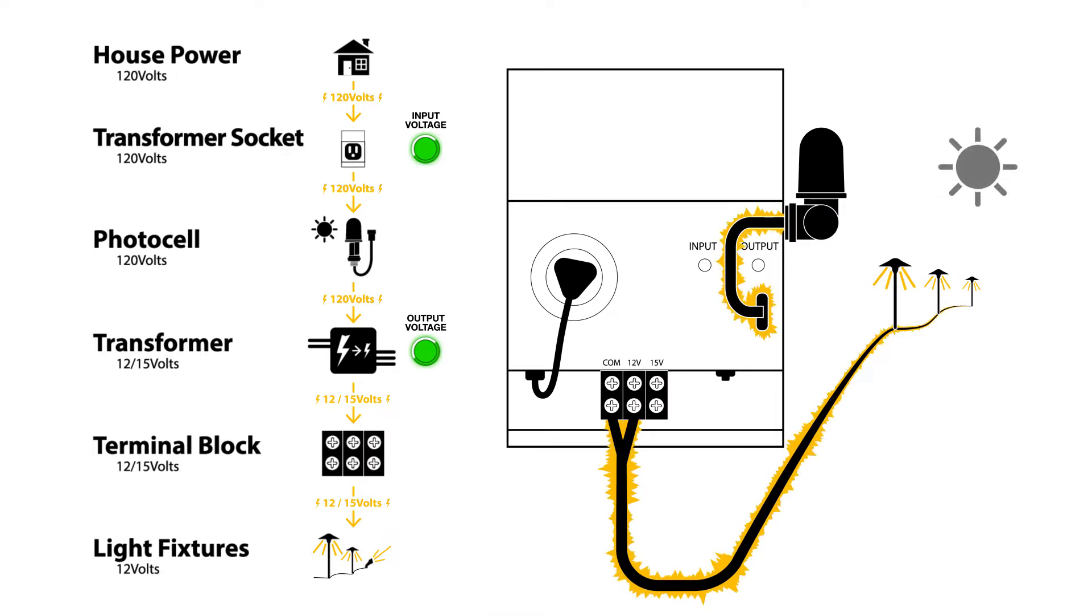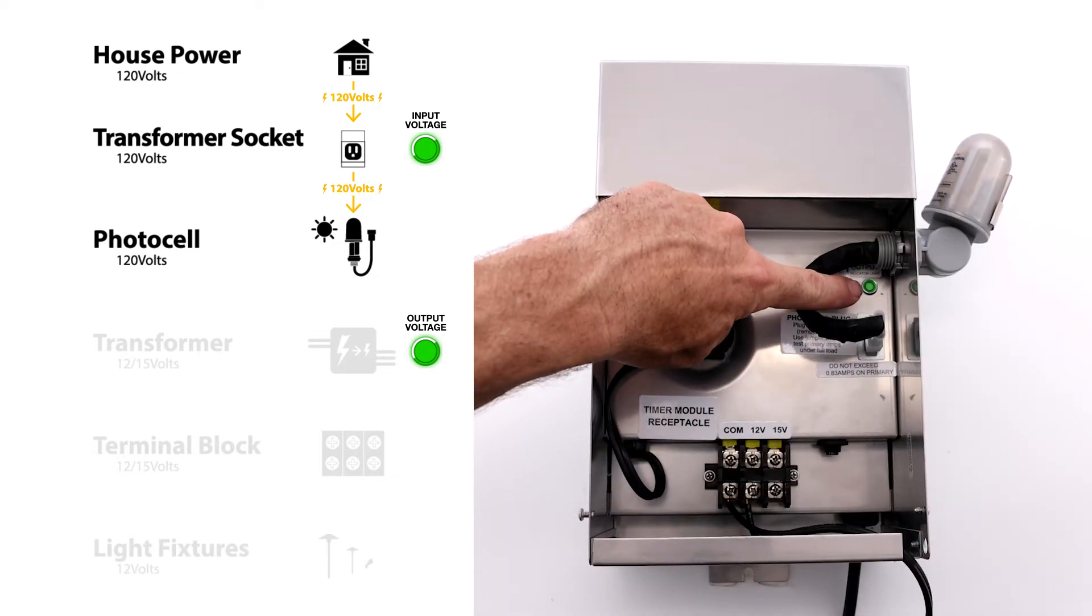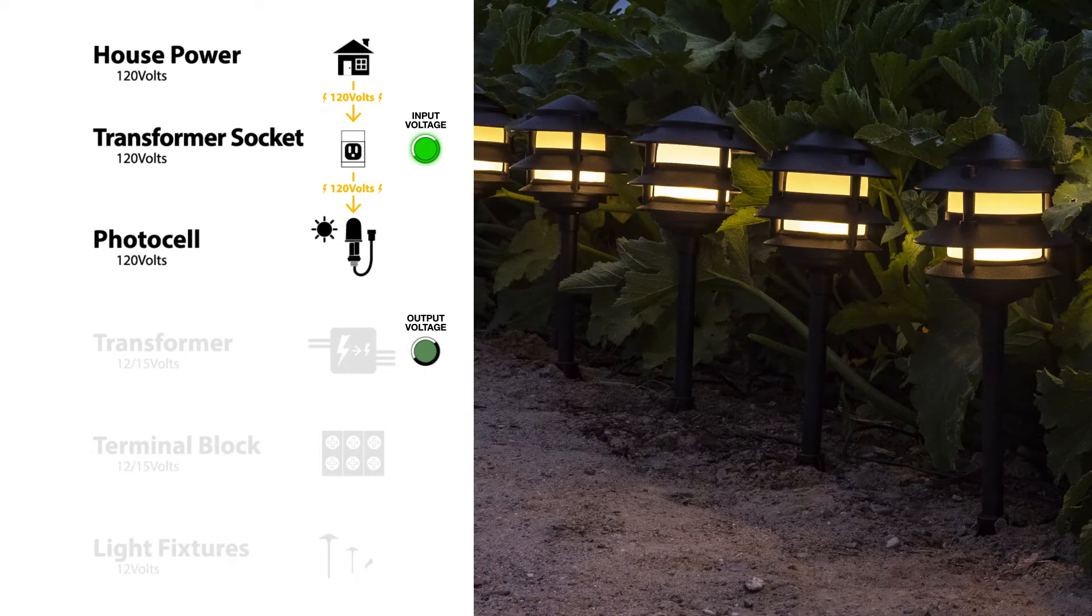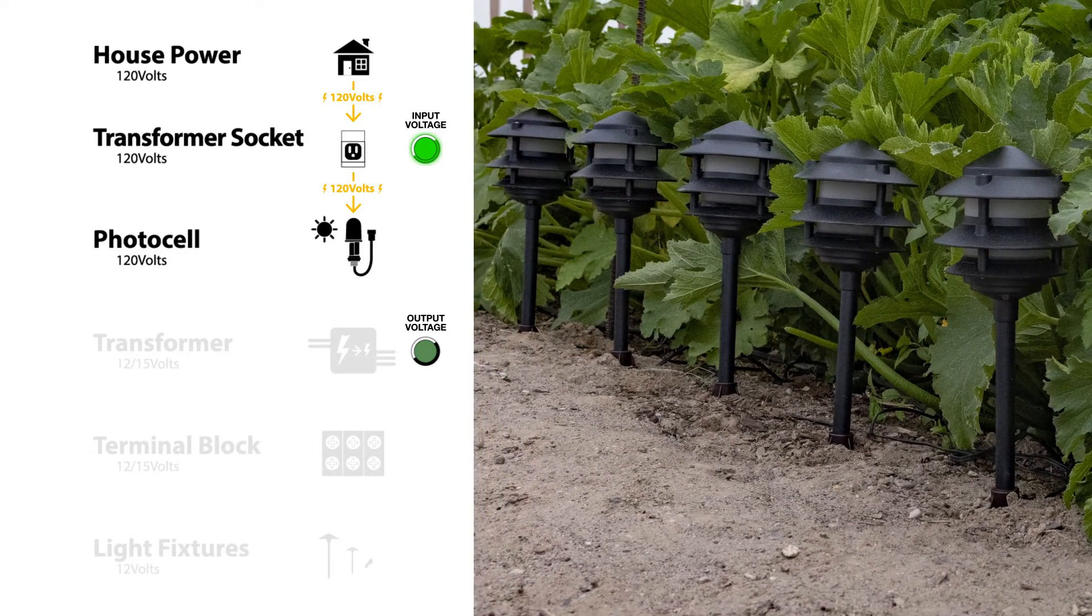When the sun comes up, the photocell will sense the light and turn off the transformer. The second indicator light will go off as well as your landscape lighting fixtures. The transformer will no longer be producing power.